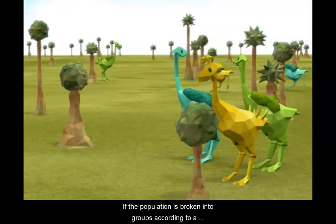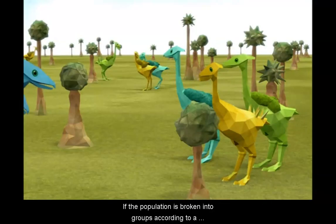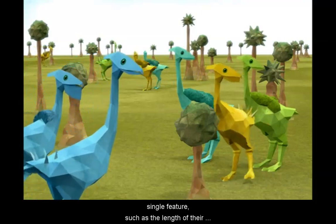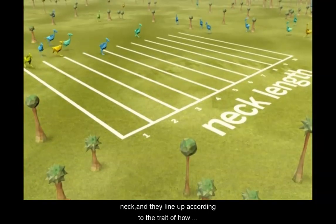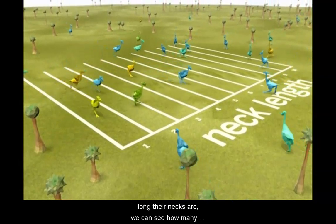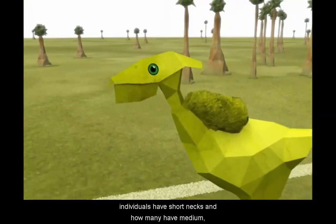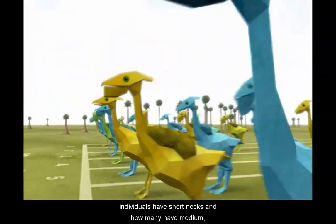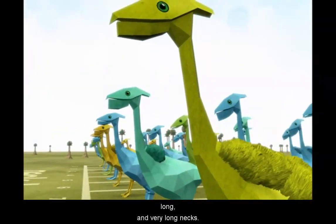If the population is broken into groups according to a single feature, such as the length of their neck, and they line up according to the trait of how long their necks are, we can see how many individuals have short necks and how many have medium, long, and very long necks.